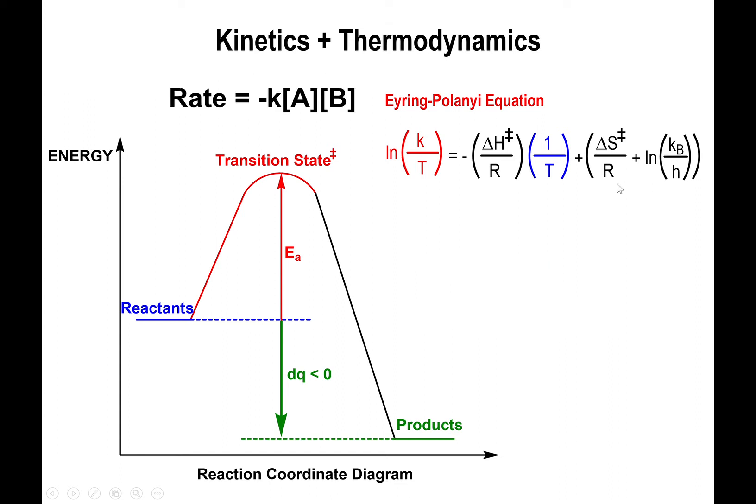Entropy tells you a little bit about what's going on at the transition state. If the entropy at the transition state is negative, this tells you that the transition state is more ordered than the reactants used to be.